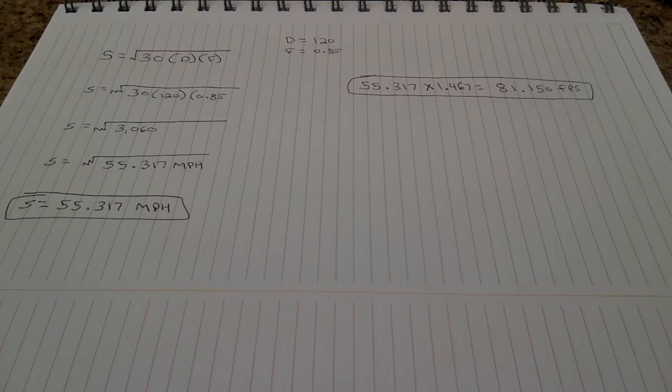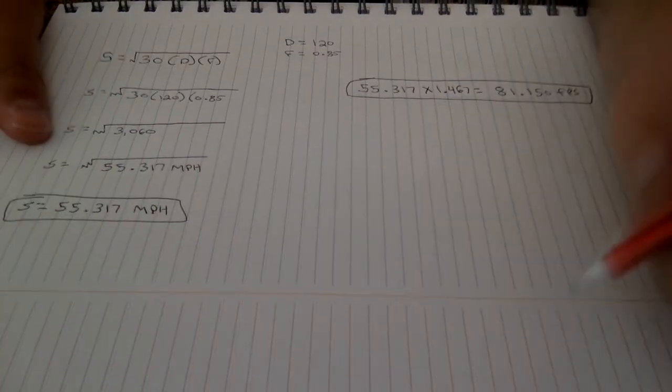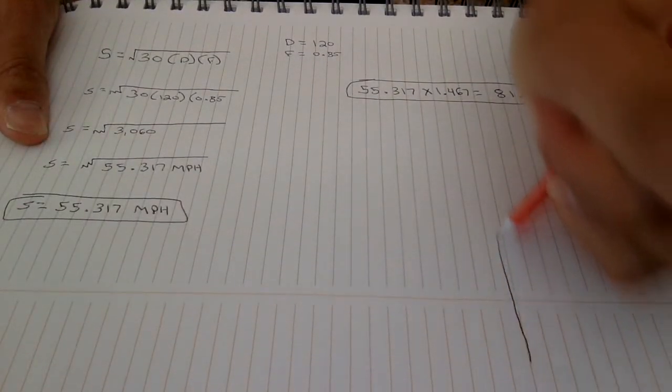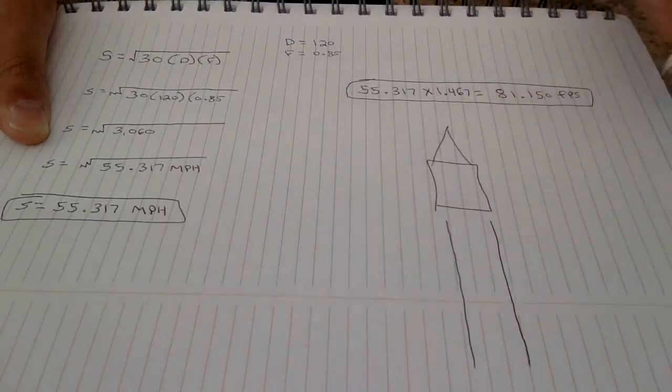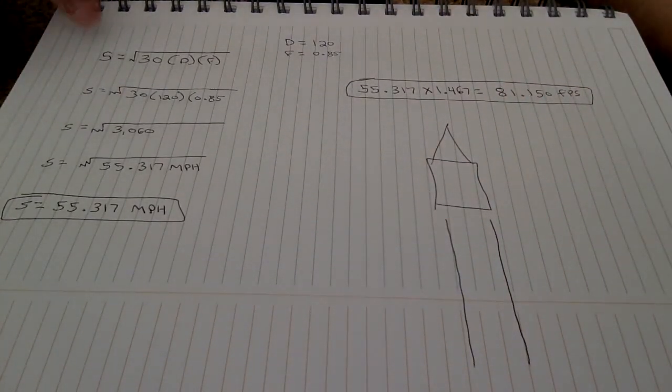This equation is only good for skid marks that go straight. If the skid mark goes to the right or left, turns, or goes in a circle, this is not going to be the formula you're going to use. That'll be a different formula which I'll provide in a different video. So assuming that the skid mark on scene was left like this, and then here's your vehicle, what you're going to do is use this formula.